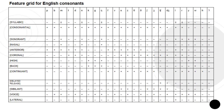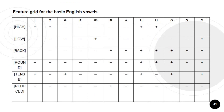Observe the feature grid of English consonants here. Note that all consonants except the glides and h are consonantal. Nasals, liquids, and approximants are sonorant, while fricatives, liquids, and approximants are continuant. Now observe the feature grid of the basic English vowels here. Note that vowels are all vocalic — an open oral cavity with voicing — as well as sonorant, voiced, and continuant. The diphthongs ay, yu, au, ou, and oy cannot be distinguished by these features but must be treated as a combination of vowel plus glide.